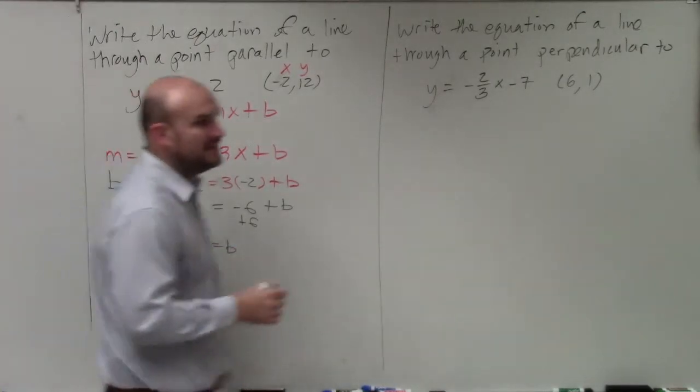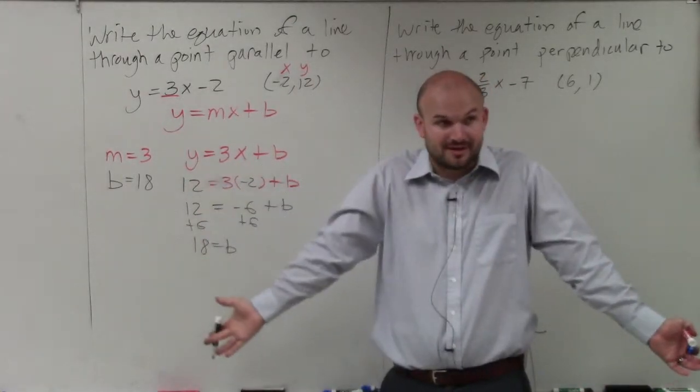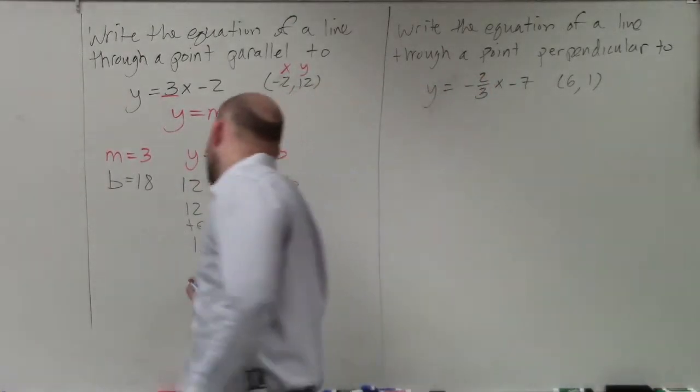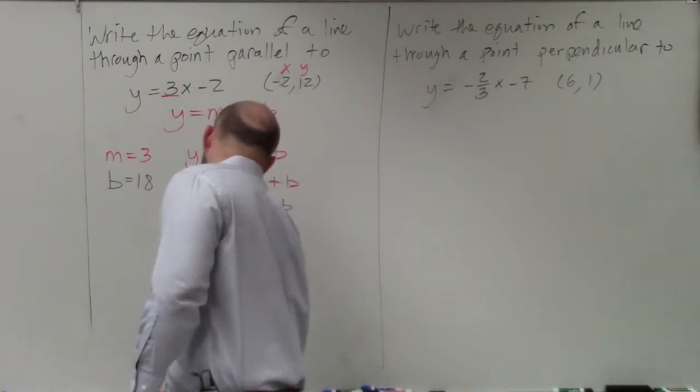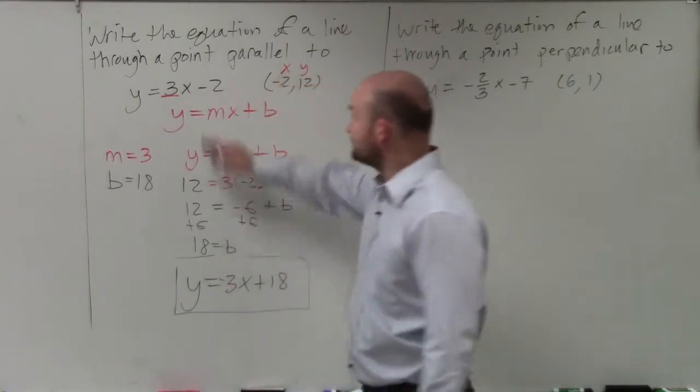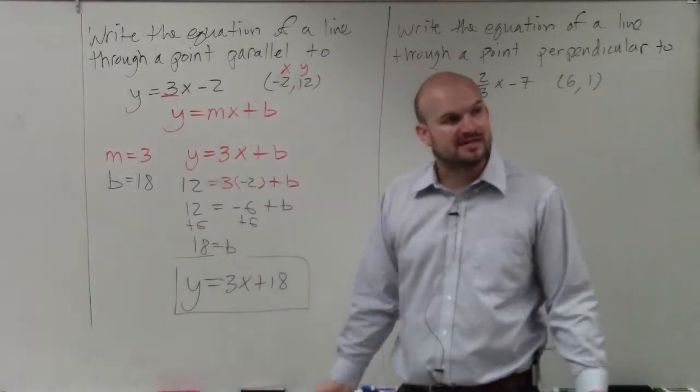So now, we know b equals 18. If I have an equation of a line, and I know what my slope is, and I know what b is, can I write the equation of the line? Yeah, absolutely. y equals 3x plus 18. That is an equation of a line that is parallel to that one, and it goes through that point. And that's what they're asking us to do.